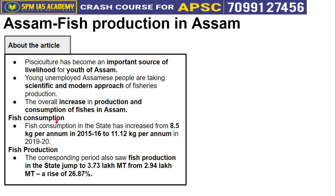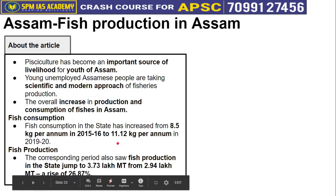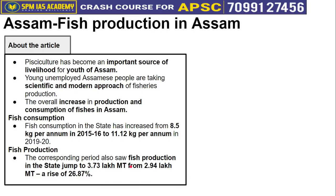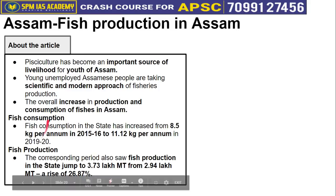Let's look at the data on how fish production and consumption has grown in Assam over the last 4-5 years. Fish consumption per capita was 8.5 kg per annum in 2015-16, which has increased to 11.12 kg per annum. Similarly, annual fisheries production was 2.94 lakh metric tons in 2015-16 and has grown to 3.73 lakh metric tons by 2020. So both production and consumption have increased, and livelihood generation through fisheries is growing.